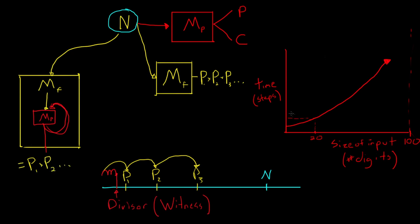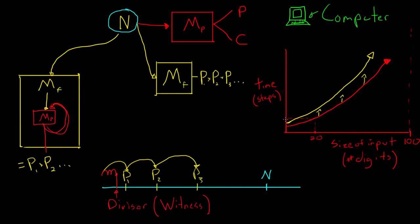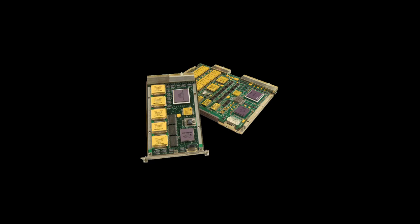Returning to this graph, a factorization algorithm would sit above the primality test line as input grows. We always have a computational limit — the number of primitive steps we can calculate — which is based on our computing power and the amount of time we have. Think of this as a horizontal line or threshold on the graph. Anything above this line is out of reach, not feasible to solve. In this lesson, we were limited by the rover's onboard computer, which is why we couldn't run primality tests on numbers with even 20 digits.